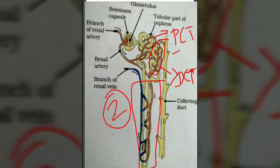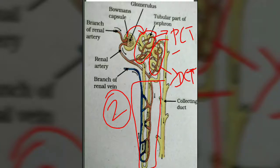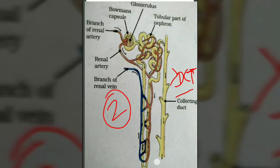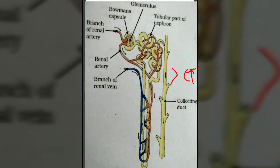PCT means proximal, which is the portion nearest to the Bowman's capsule. The hairpin part is the bent, banded portion in the middle. DCT means distal — the part of the tubule that is farthest from the Bowman's capsule. So these are the three important structural sub-parts of the tubular portion of the nephron: PCT nearest to Bowman's capsule, hairpin loop in the middle, and DCT farthest from it.